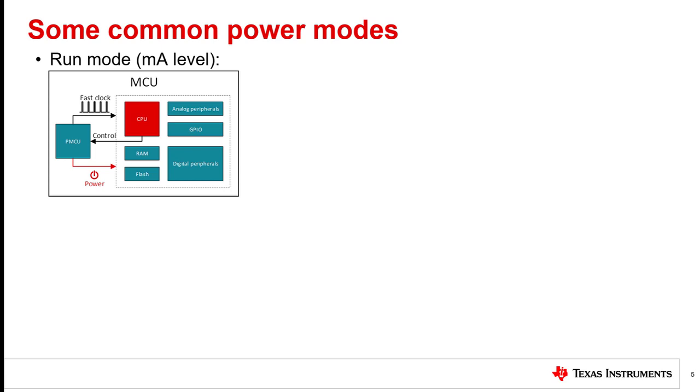Earlier, we simplified the idea of power modes into just two categories. But in truth, there are usually multiple different power mode levels in a given MCU. Usually, you do just have a single active mode. Here, we call it run mode, which uses milliamp level current and has the CPU powered on.